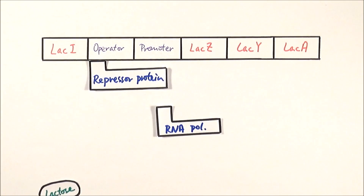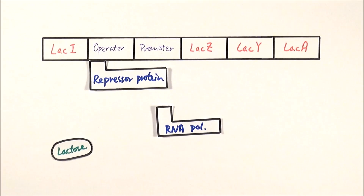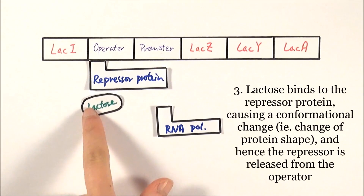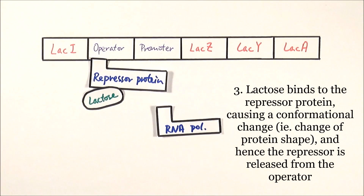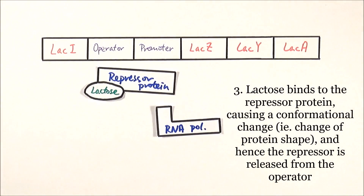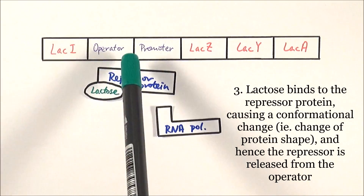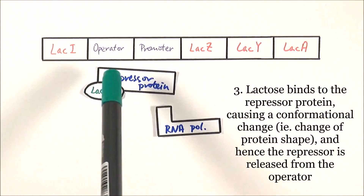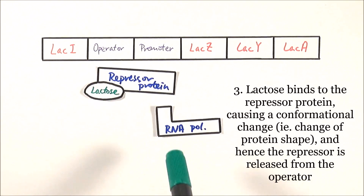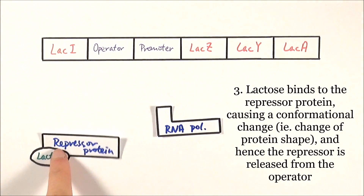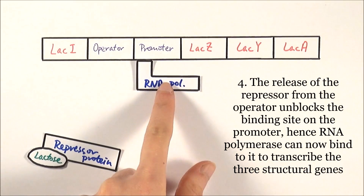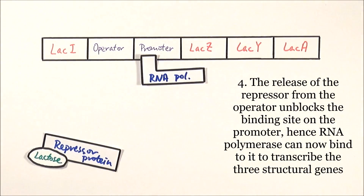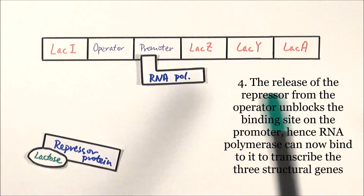If there is no more glucose, the E. coli or prokaryote must metabolize lactose instead. Lactose then binds to the repressor protein, and this binding changes the conformational shape of the repressor protein. As a result, the repressor protein can no longer bind to the operator due to this shape change, and it moves away, revealing the binding site on the promoter. Therefore, RNA polymerase can bind to the promoter, and that allows transcription to happen.